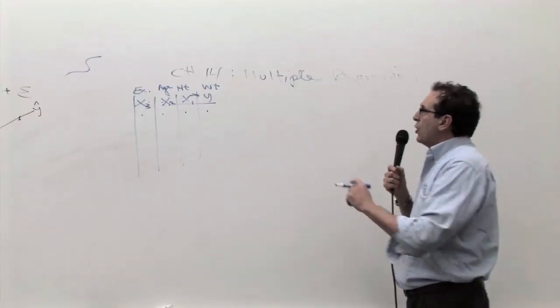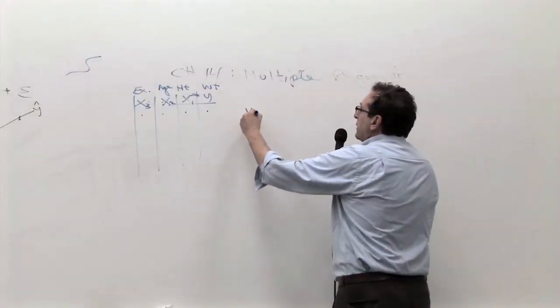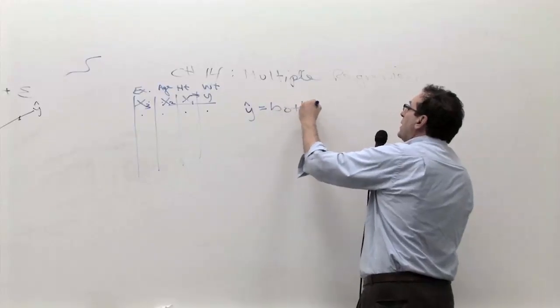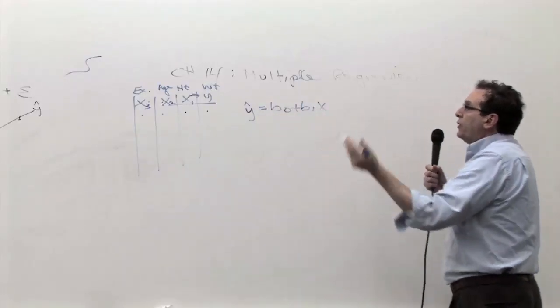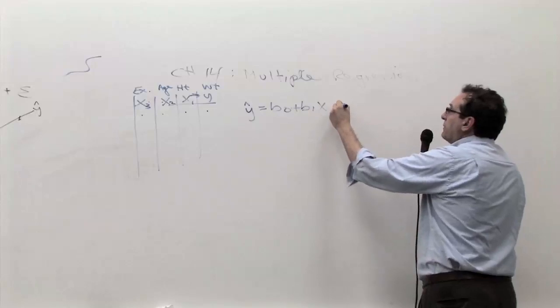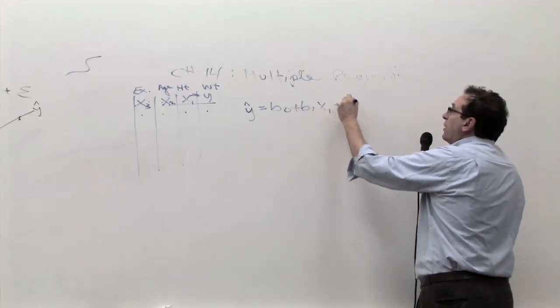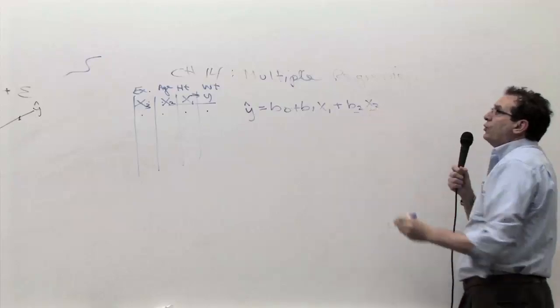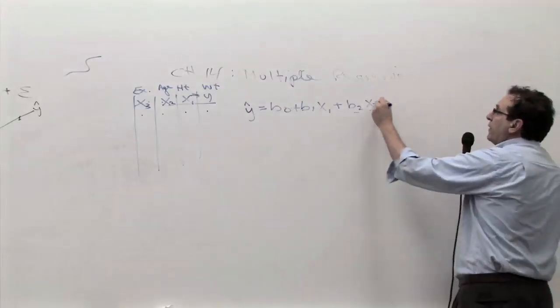Now, so basically what you're going to do is, after all is said and done, instead of having the equation b0 plus b1 times x, the equation you're going to develop in chapter 14 is going to be b1 times x1, b2 times x2, indicating how much of an impact x2 has on the final prediction of y.